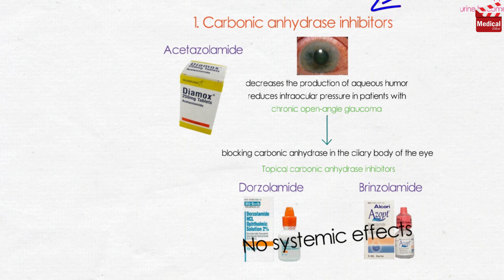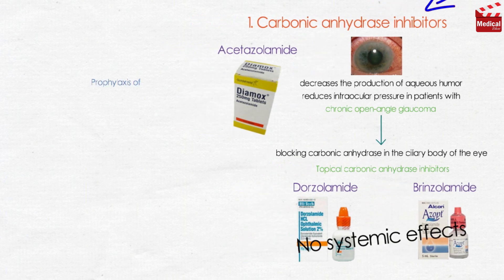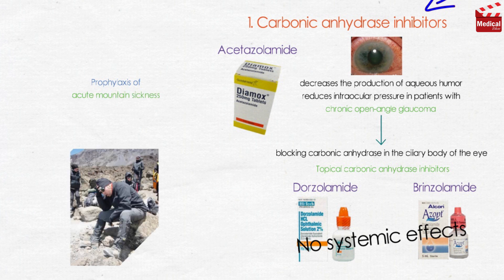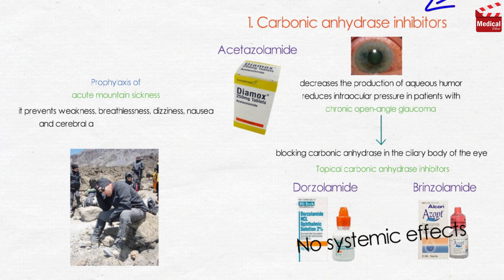Acetazolamide can be used in the prophylaxis of acute mountain sickness. It prevents weakness, breathlessness, dizziness, nausea, and cerebral as well as pulmonary edema characteristic of the syndrome.